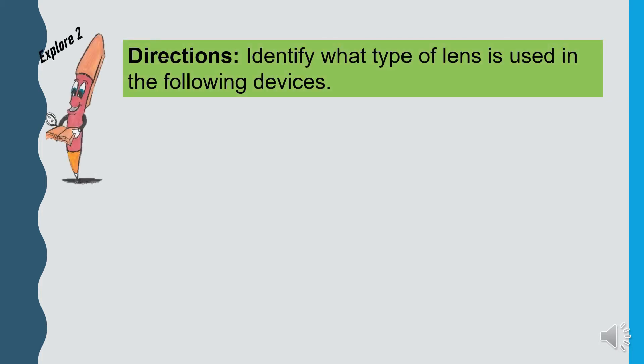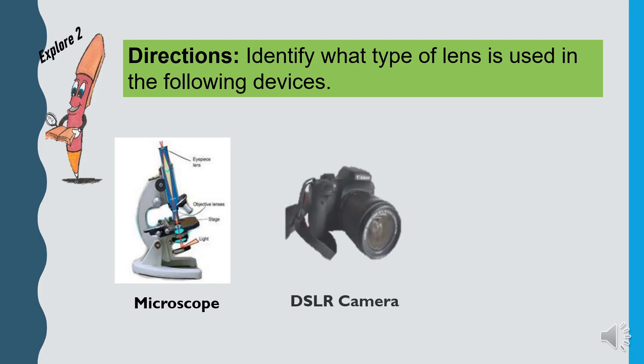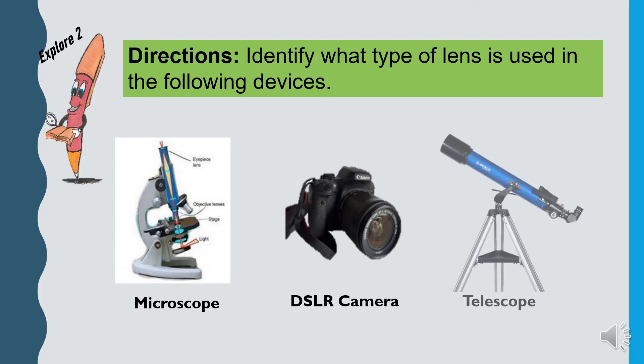And you're done answering the first activity. Let us continue answering the next 3 activities in this video lesson. Explore number 2, Identify what type of lens is used in the following devices. Device number 1 Microscope, Device number 2 DSLR camera, and device number 3 Telescope.